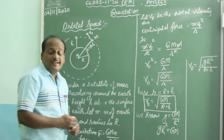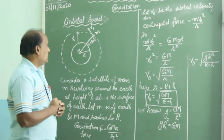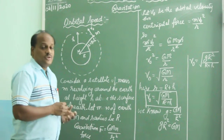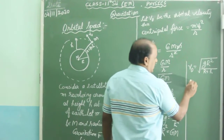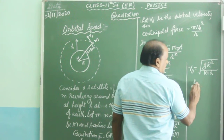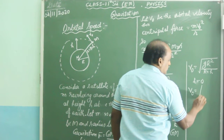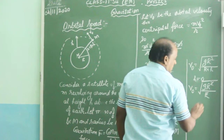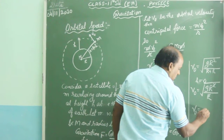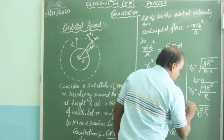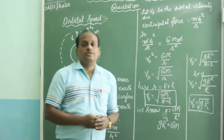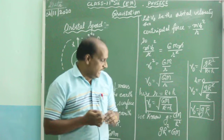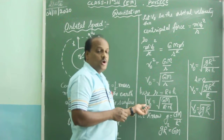If the satellite is revolving very close to Earth, we take h as 0. So we get V0 equals the square root of gR² divided by R, and R and R get cancelled. So V0 equals the square root of gR. This is the formula for the orbital speed of a satellite revolving very close to the Earth's surface, and this is the normal expression for orbital velocity.